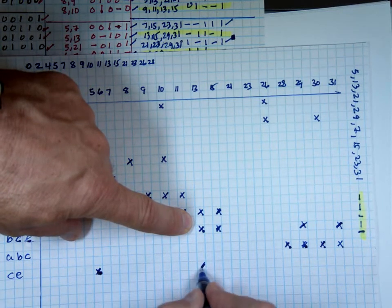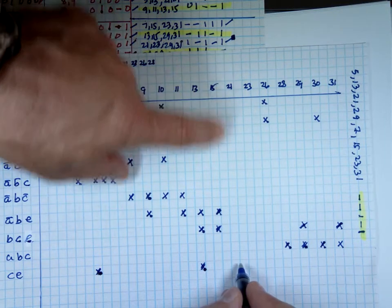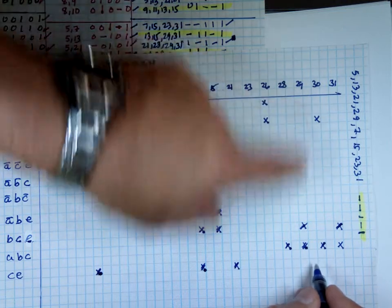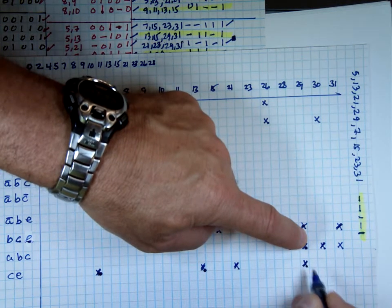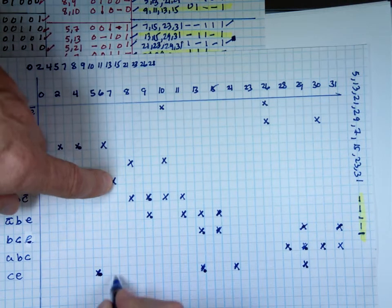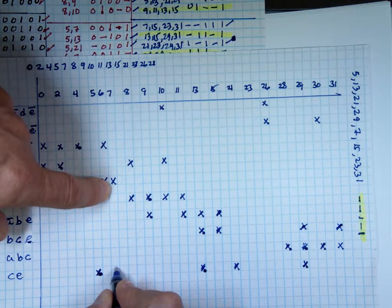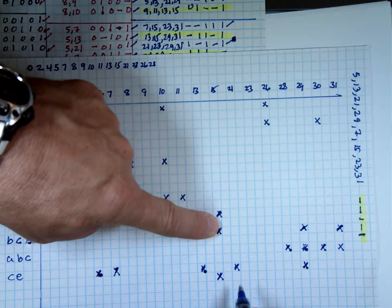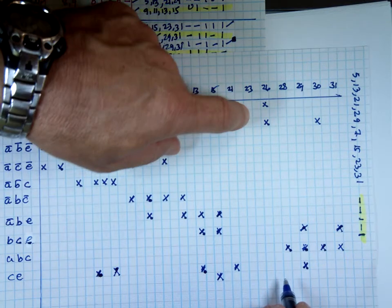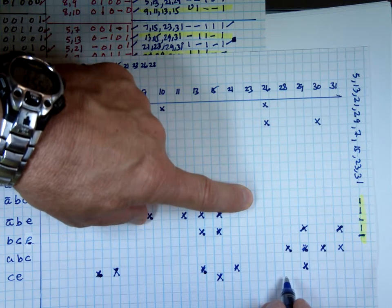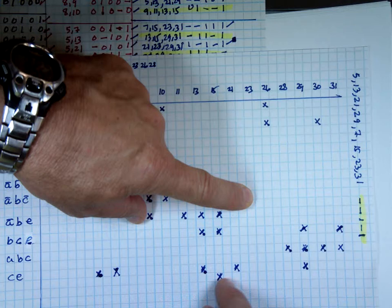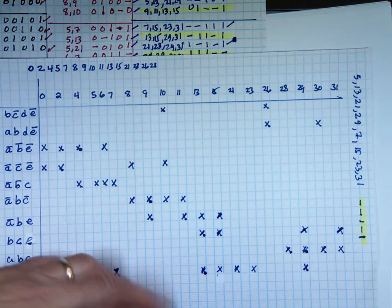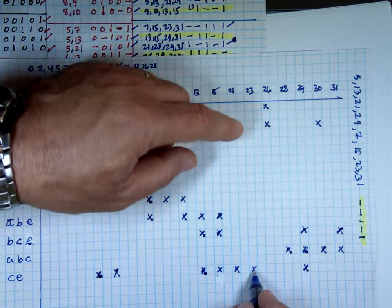13 — I'm going to go blind there too — 21, 29, 7, come back to 7, 15, 23, and 31.